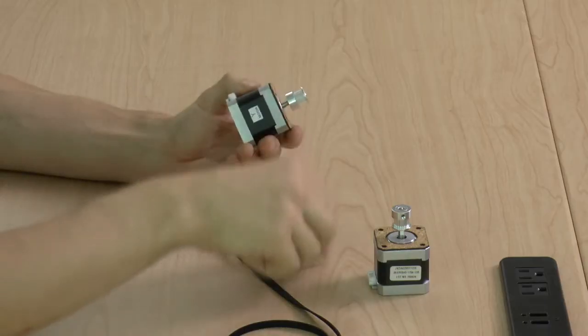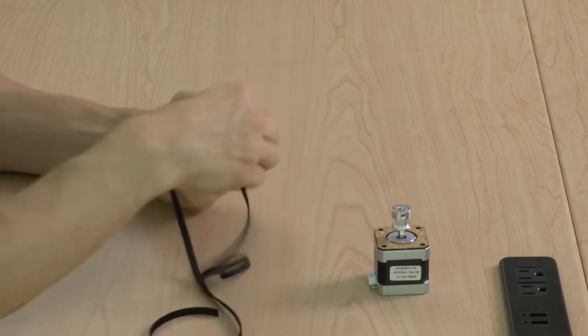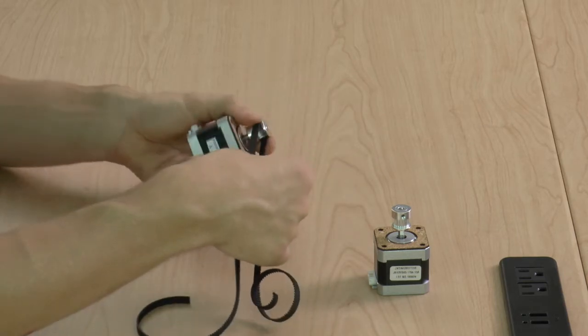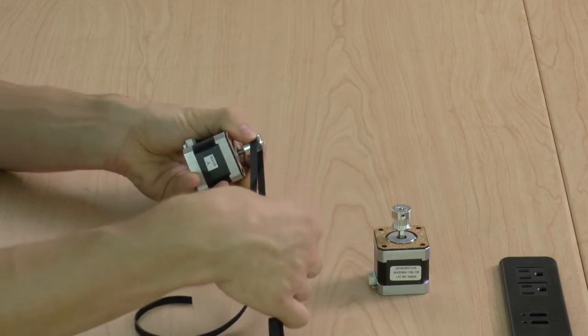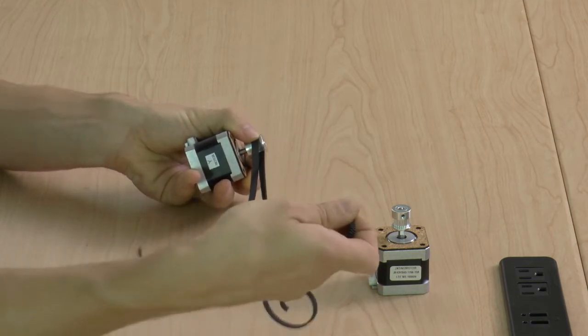The pulleys have grooves and our belt has teeth that fit into those grooves. And as the motor rotates, the belt moves as well.